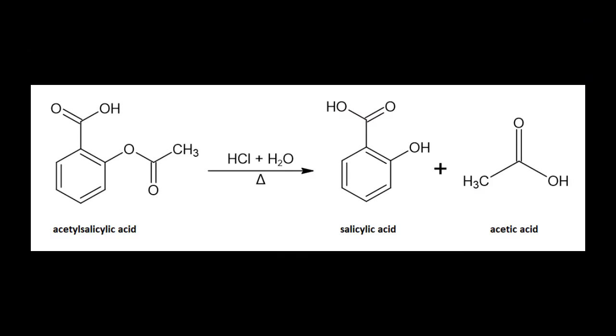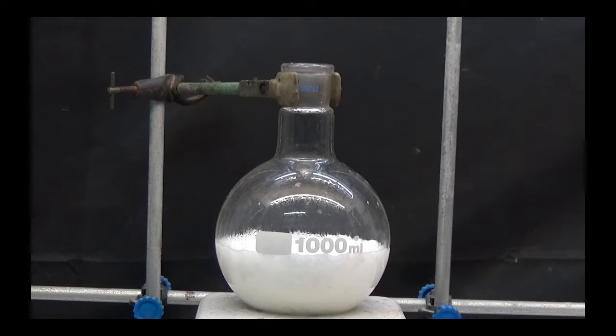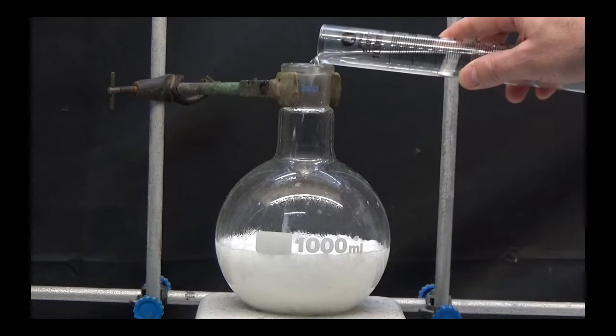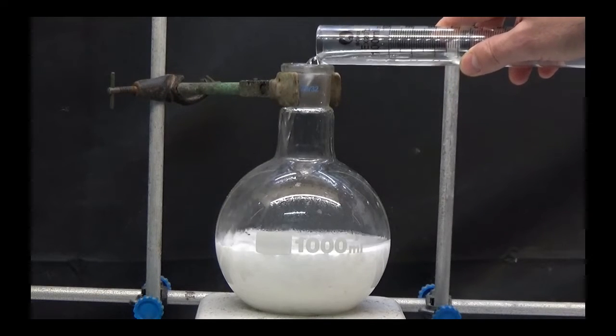Heating acetylsalicylic acid with dilute acid causes the acetyl group to hydrolyze, resulting in the formation of salicylic acid and acetic acid. By allowing it to cool, a significant amount of salicylic acid crystallizes.